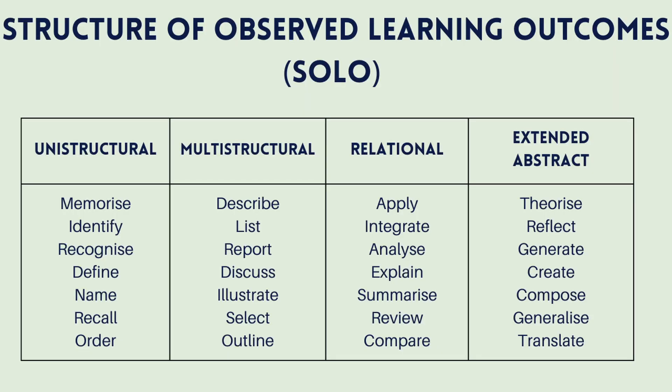One of the core parts of constructive alignment is making sure you have clearly defined learning outcomes — they need to be specific and measurable. I tend to use what's called the SOLO taxonomy when I write my learning outcomes. SOLO stands for Structure of the Observed Learning Outcome, and it's a model that describes the level of learning complexity for students. It's similar to Bloom's taxonomy, but I have a preference for this particular framework.